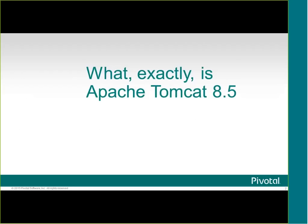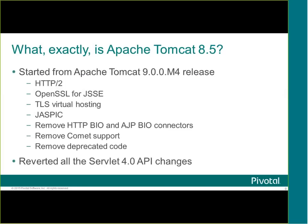So what exactly is 8.5? It's not 9 and it's not 8. We started from the Milestone 4 release of Tomcat 9, so it's got all of the features in 9 that I've just mentioned. It's also had BIO removed — so there's no HTTP BIO, no AJP BIO. Comet support has been removed and all the deprecated code has been removed.